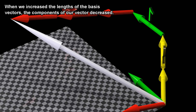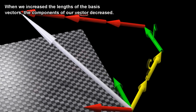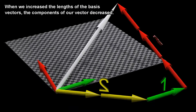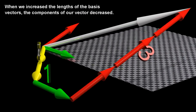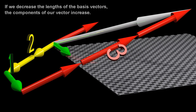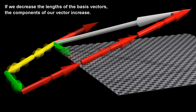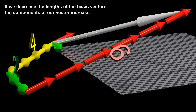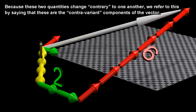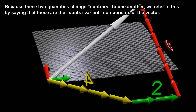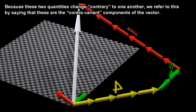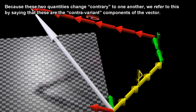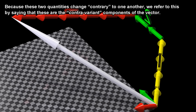When we increased the lengths of the basis vectors, the components of our vector decreased. If we decrease the lengths of the basis vectors, the components of our vector increase. Because these two quantities change contrary to one another, we refer to this by saying that these are the contravariant components of the vector.